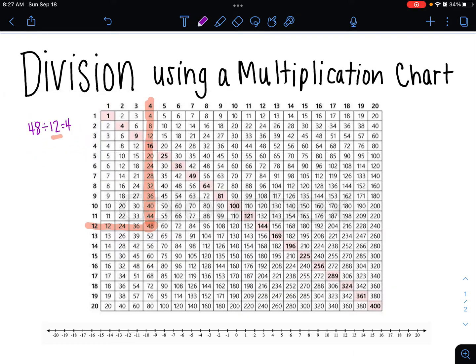Now, we have to think about division as being the opposite of multiplication. It's called inverse operations. So if 48 divided by 12 is 4, then we can say that 12 times 4 is 48.